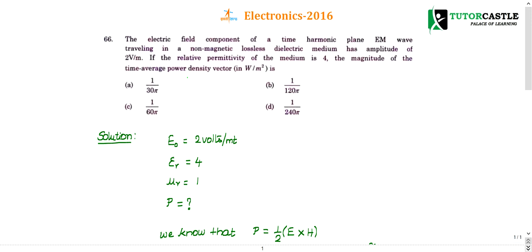Let me write the given data. Here is given that amplitude of the electric field is given as 2 volts per meter. I have written that first. Then relative permittivity of the medium is given as 4. I have written that.